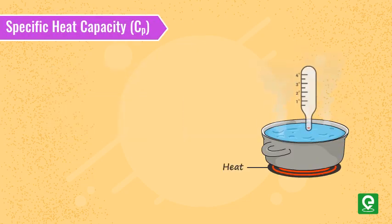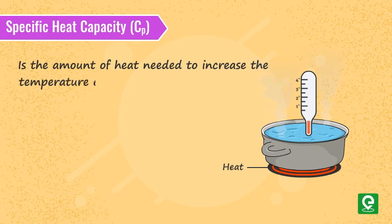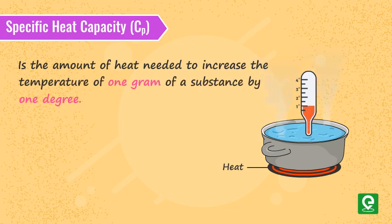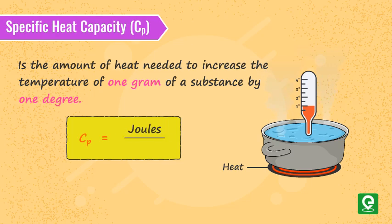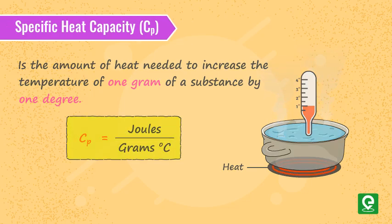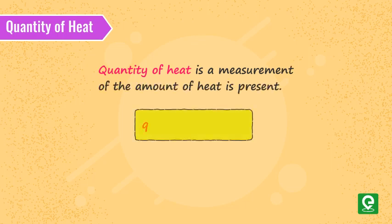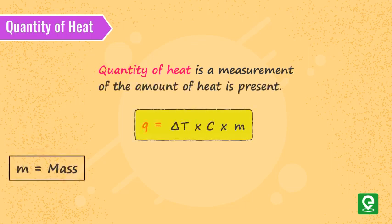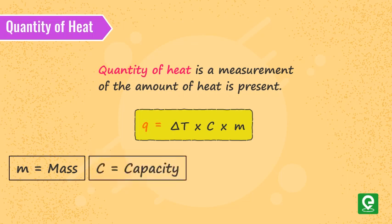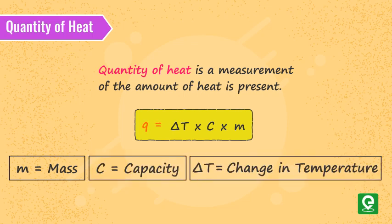Specific heat capacity is the amount of heat needed to increase the temperature of one gram of a substance by one degree. It is expressed in joules per gram per degree Celsius. The quantity of heat Q is equal to the mass M multiplied by the specific heat and the change in temperature.